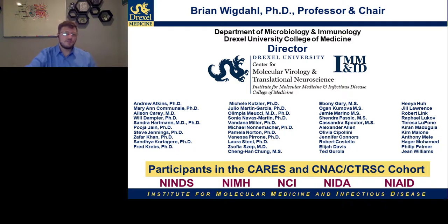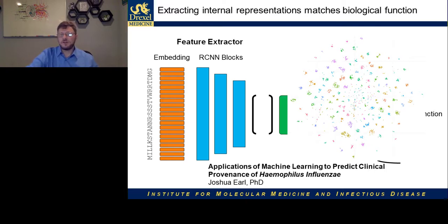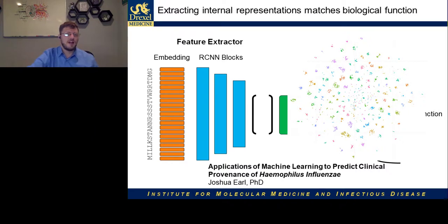Next up is Josh Earl. We work together on these types of projects, and I want to give a lead-in for his talk as well. These neural networks we have trained to convert sequence into protein function have learned the features important for those protein functions. We can think of one part as a feature extractor and one as a predictor. We can remove the predictor and just look at the extracted features, and Josh will talk about how those features can be useful in other contexts — specifically, how orthologous genes may be related to each other. Thank you very much.